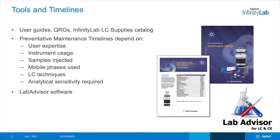Let's start off with some useful tools and timelines. This presentation covers technical content that is general to all LC systems. We will show examples on our Agilent systems, and you will see some references to part numbers or supplies. Always refer to your own user manual or user guide for your system. For Agilent systems, we have Quick Reference Guides, or QRGs, and we also have the Infinity Lab Supplies Catalog that outlines all the parts for your specific system or module.